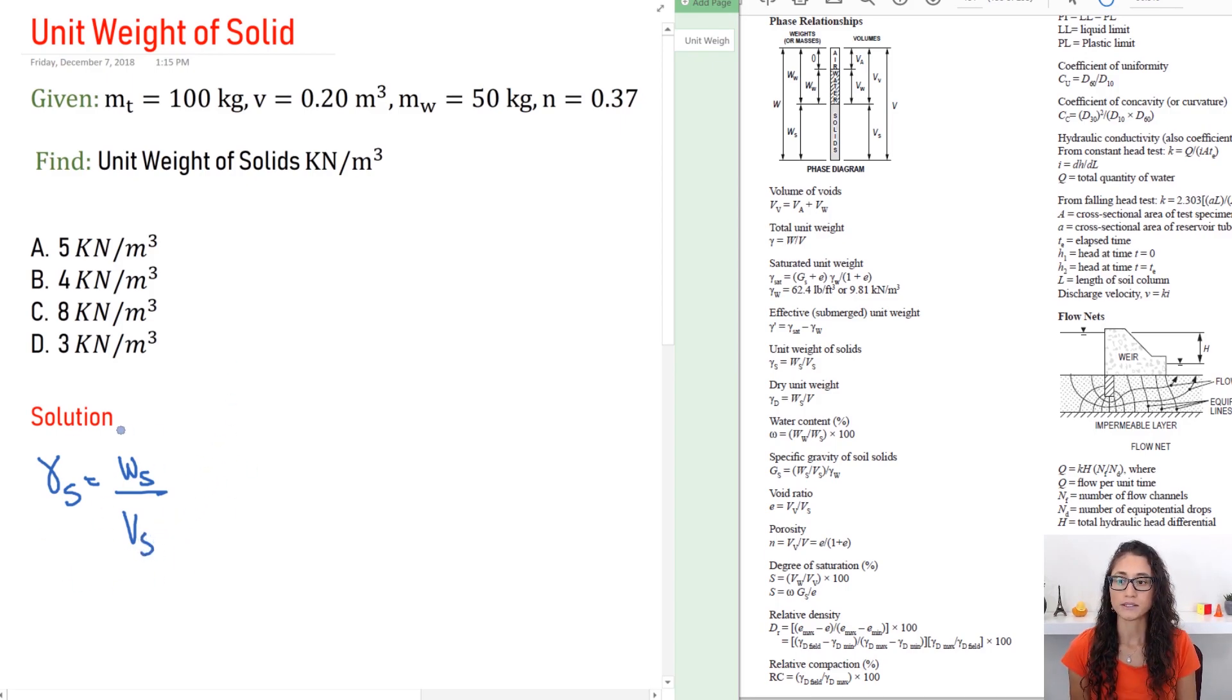Okay, so the weight of the solid we can easily determine it, as we said in the previous videos, the weight is an external force so it's equal to mass times gravity. We're given the mass, we can just figure out the mass of the solid and then we can just multiply by g to determine the weight of the solid. Now Vs, we were given V and we were given the porosity, so from those two we can determine Vs.